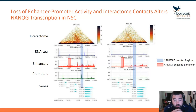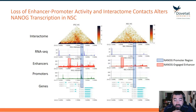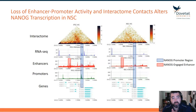Moreover, in the red box, through the interactome we can link that particular enhancer mark as being the strongest interaction with the NANOG promoter in iPSC. And that particular enhancer mark is also missing in the NSC data type.